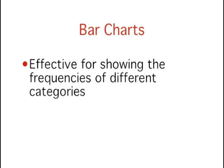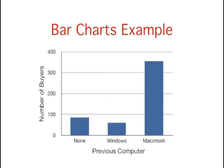In the section on qualitative variables, we saw how bar charts could be used to show the frequencies of different categories. For example, this bar chart shows how many purchasers of iMac computers were previous Macintosh users, previous Windows users, and new computer purchasers. Here, the bar chart shows the frequency of each category of iMac purchasers.